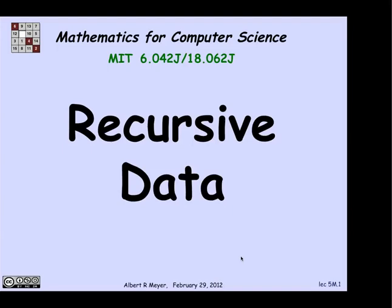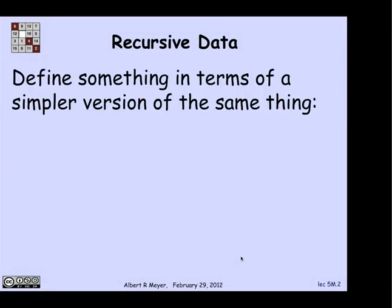Recursive data play a key role in programming. So let's take a mathematical look at what goes on. The basic idea of recursive data is roughly that you're going to define a class of objects in terms of the simpler versions of the same object, a little bit more precise, with a little more precision.